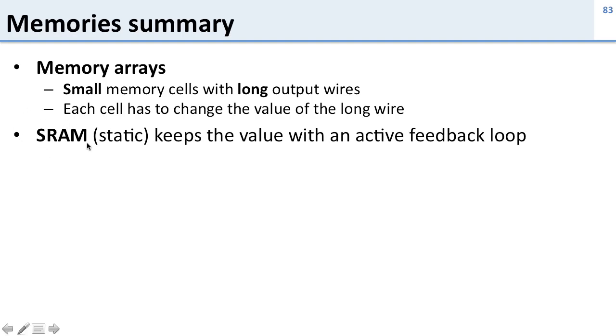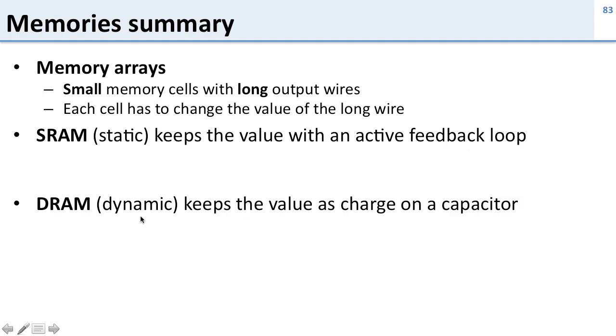We have two types of memory. SRAM, static random access memory, keeps the value with this active feedback loop, just like we saw in the latches. DRAM, or dynamic random access memory, keeps the value as a charge on a capacitor. So it has no way to replace the charge. You have to write into it again.